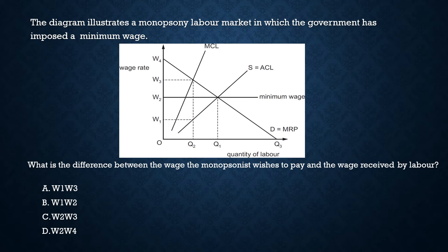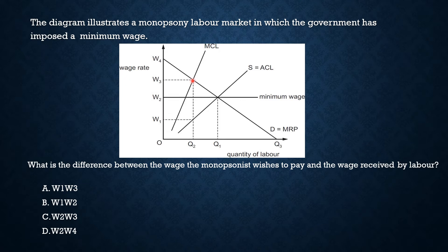The second question states that the diagram illustrates a monopsony labor market in which the government has imposed a national minimum wage. The question asks: what is the difference between the wage the monopsonist is supposed to pay and the wage received by labor? In the diagram, marginal cost equals marginal revenue product at one point; the equilibrium wage rate is where supply of labor meets demand for labor.